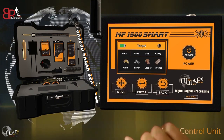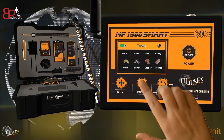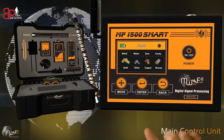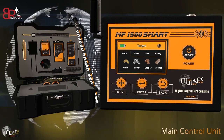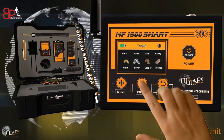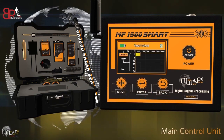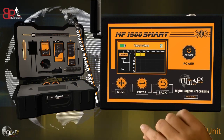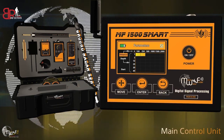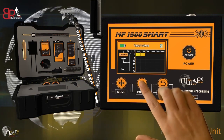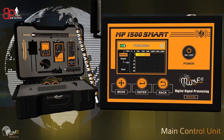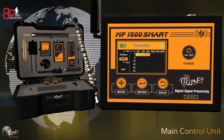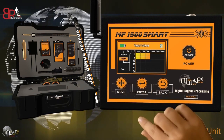Navigate to the Metal list, for instance, and select Silver. This will lead you to the Search Criteria interface to choose the desired search distance, up to 2000 meters, and then select the desired search depth, up to 40 meters.